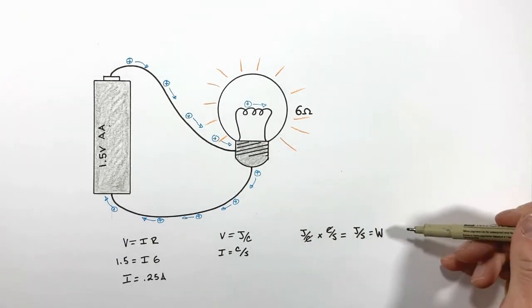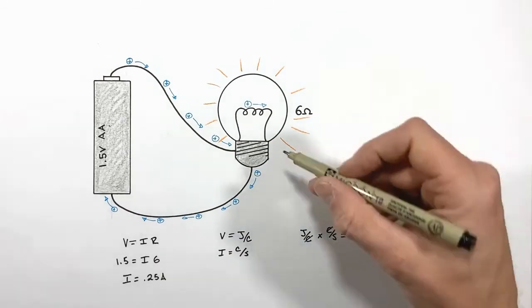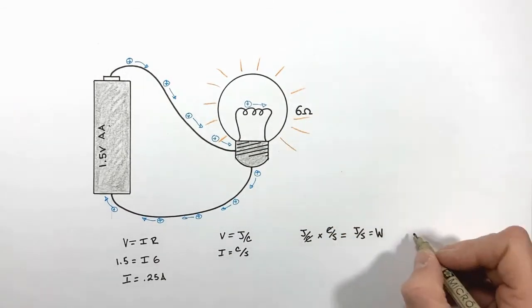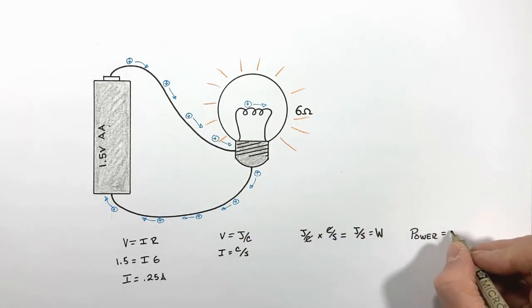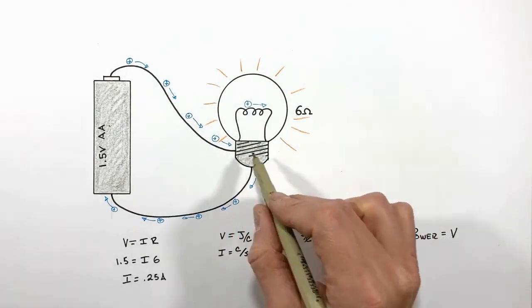So really through just a little bit of unit analysis here, we can see that the electrical power used up by this light bulb is really just the voltage across the light bulb multiplied by the current through the bulb.